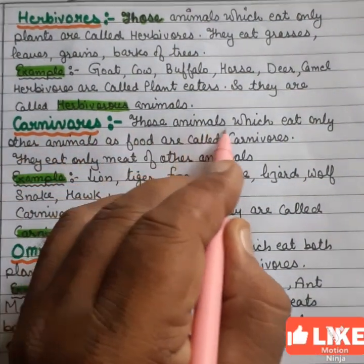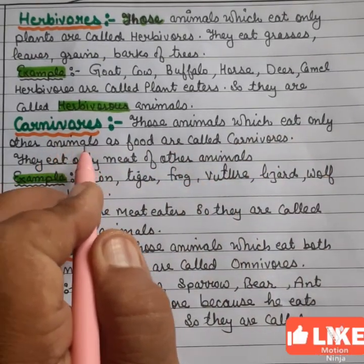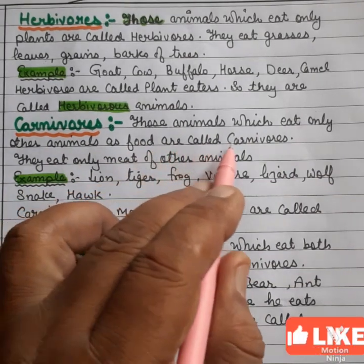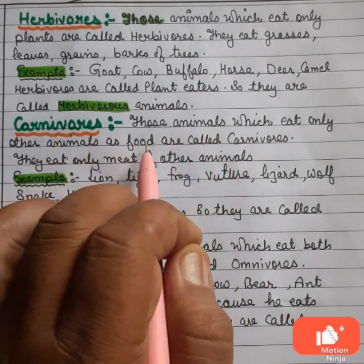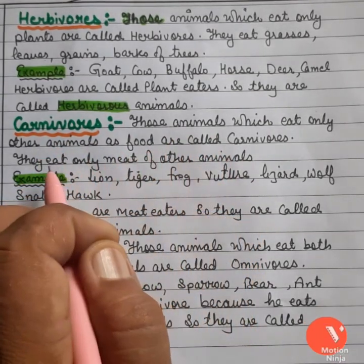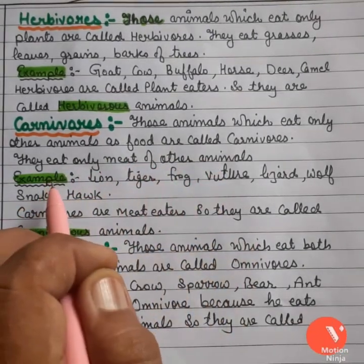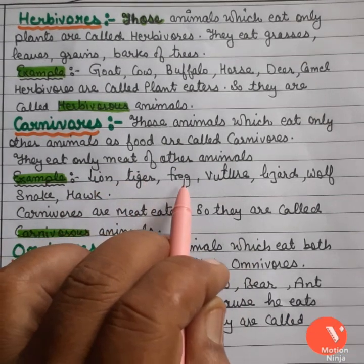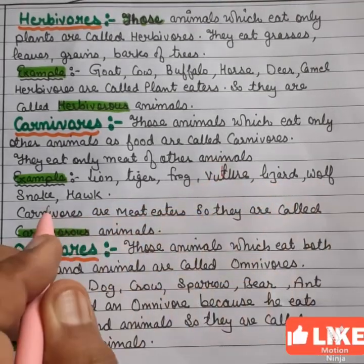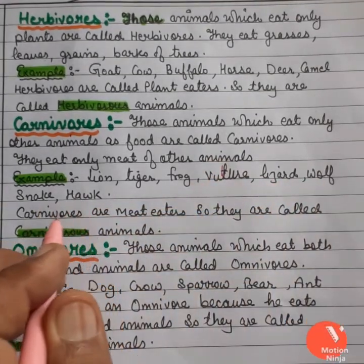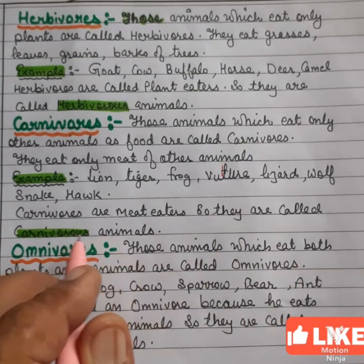Second category, carnivores. Those animals which eat only other animals as food are called carnivores. They eat the meat of other animals. For example, lion, tiger, frog, vulture, lizard, wolf, snake, hawk. Carnivores are meat eaters, so they are called carnivores.